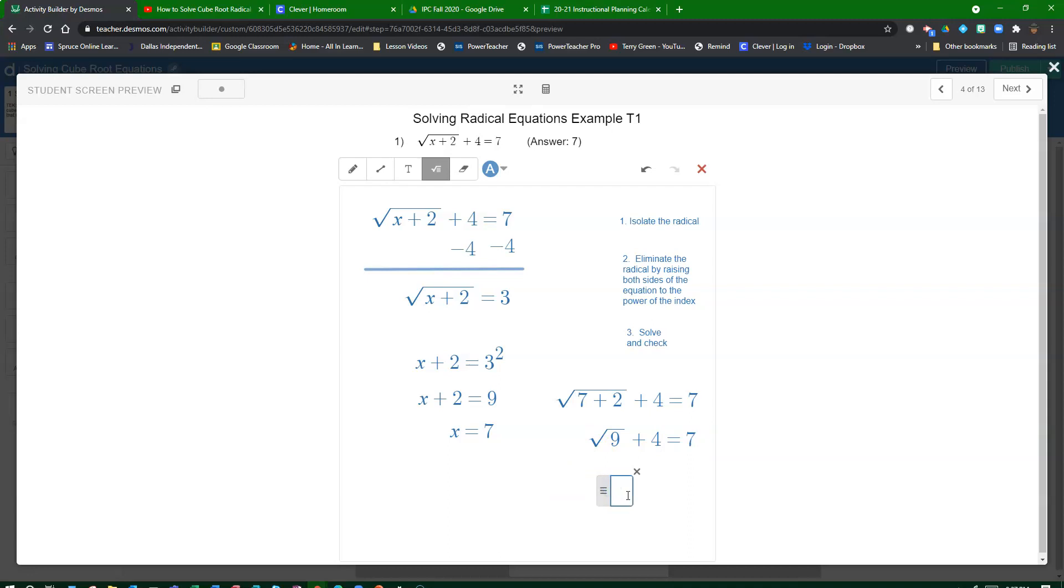Plus 4 equals 7. But what is the square root of 9? The square root of 9 is 3, and 3 plus 4 is equal to 7. So it looks like both sides check out because 7 equals 7. So we solved it and we checked it.